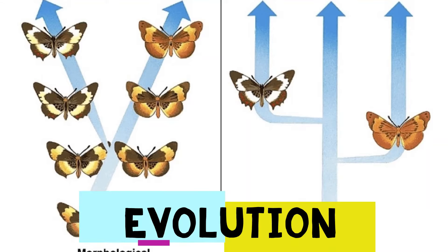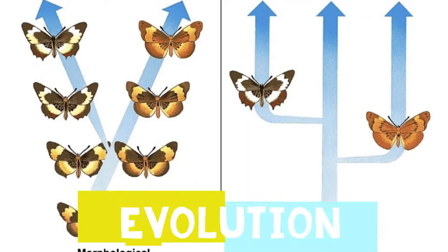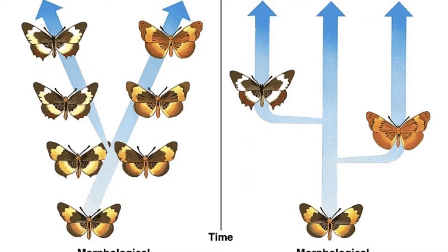Evolution could happen evenly over time or in bursts. The latter option is called punctuated equilibrium. Darwin's perspective was that of evolution as a continuous process over time, but Elridge and Gould proposed the theory of punctuated equilibrium. Diagrams and cladograms are used to show the relationships between species over time, showing whether they have diverged from a common ancestor, continued in parallel, or converged from different ancestors. As populations accrue different adaptations, their evolutionary journey can be graphed, revealing patterns of evolution: stabilizing, directional or disruptive.